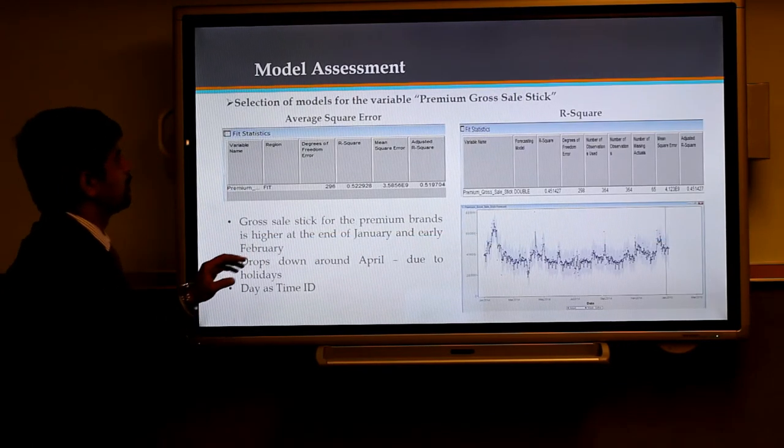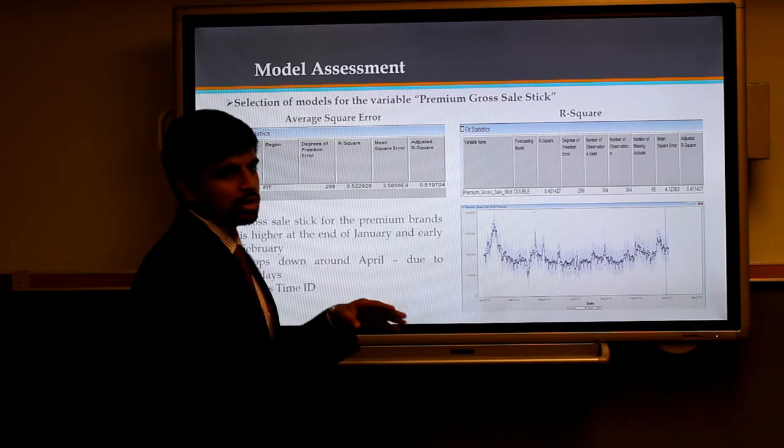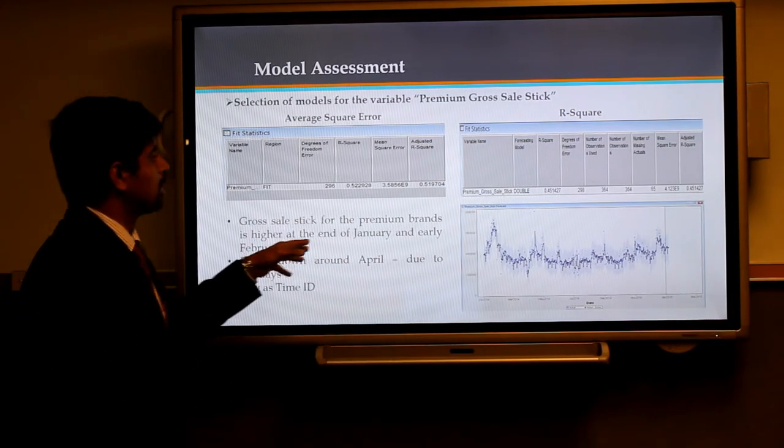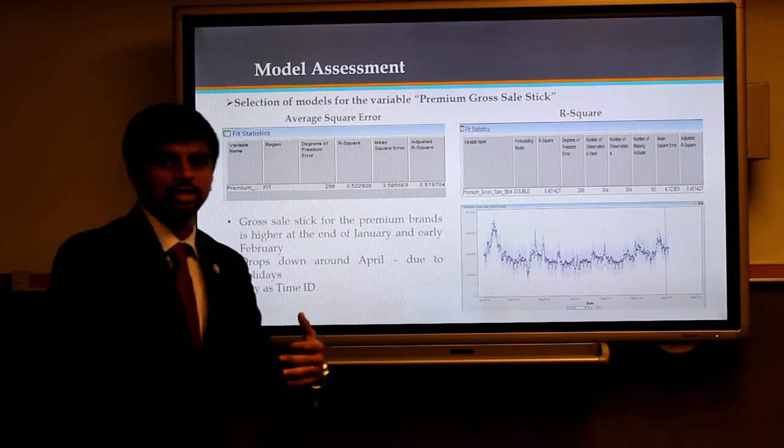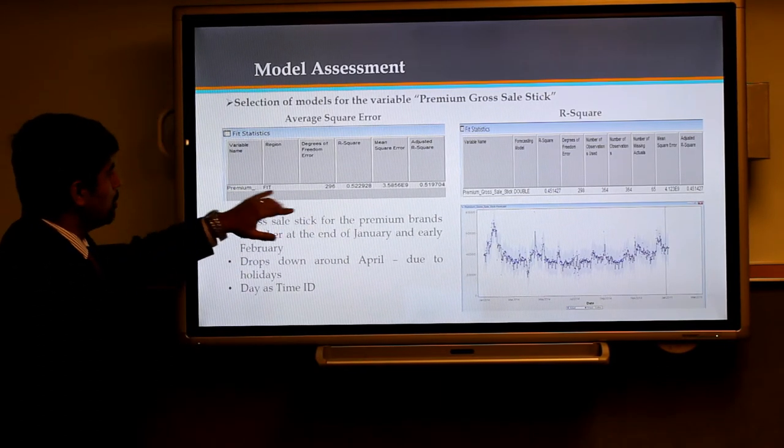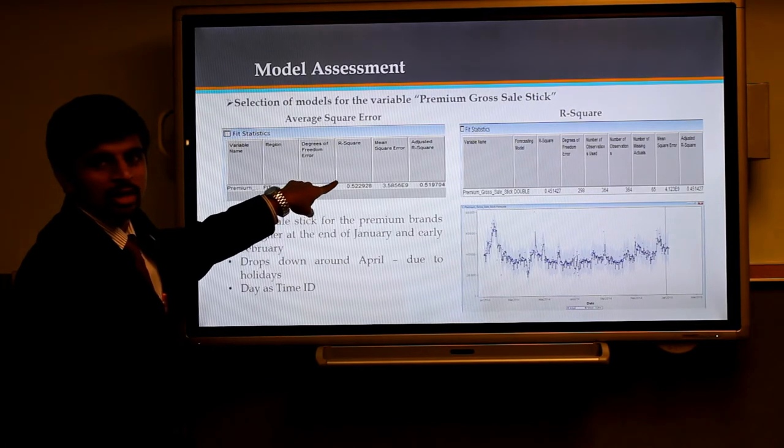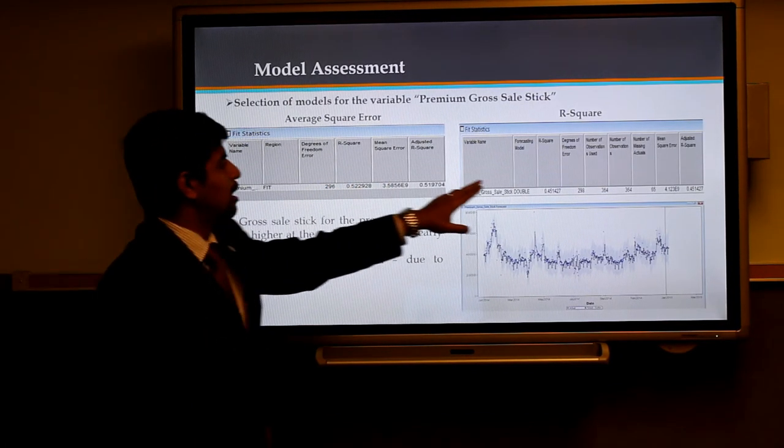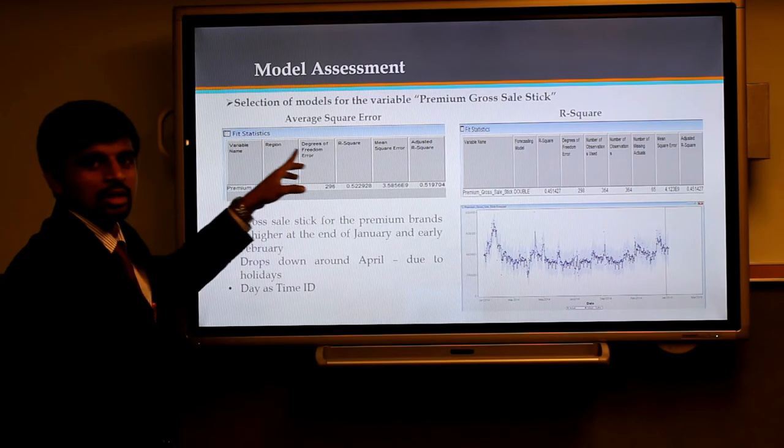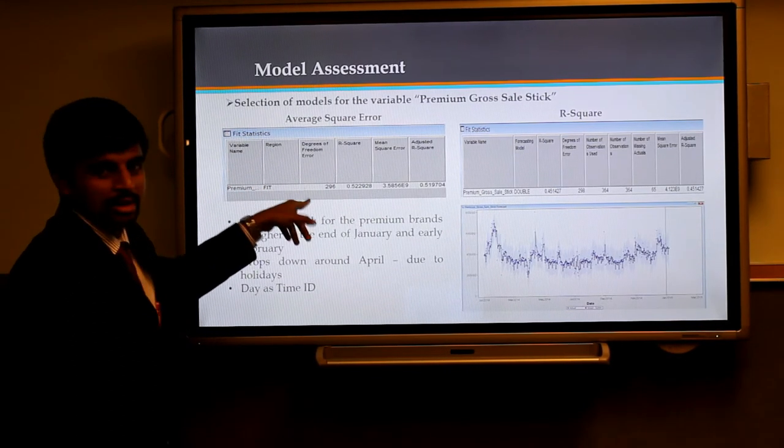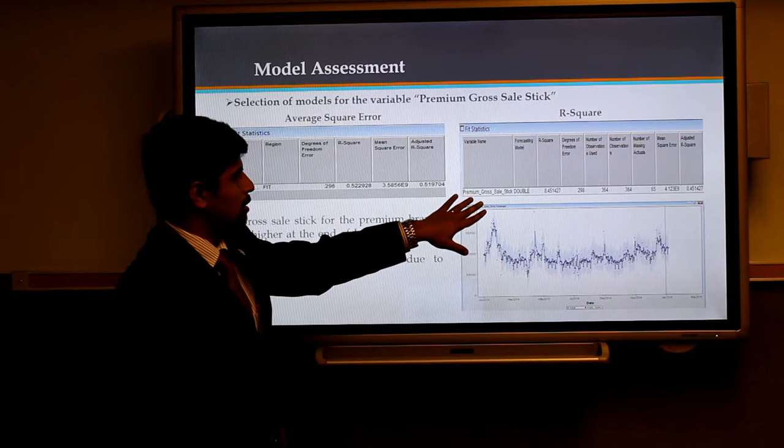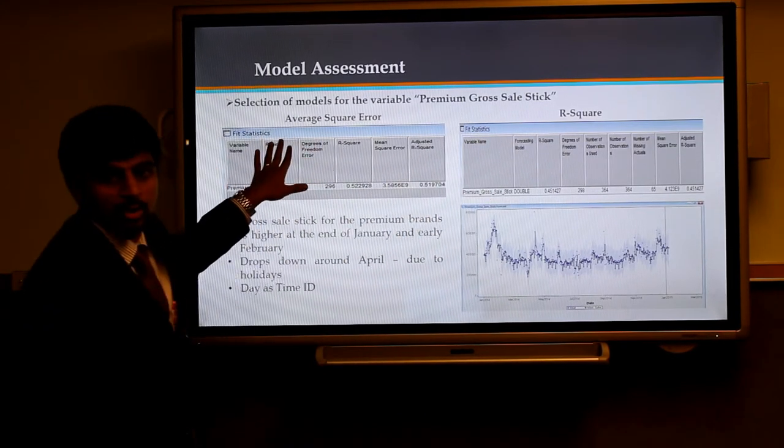Moving on to the selection of the models with respect to the variable premium gross sale sticks, we had to go by the time series model here. As Kiran mentioned about the average square error and the R square criteria, the results are displayed here from the two tables on top. The R square for the average square error was 52.29, and the R square for the R square criteria was 45.17. Out of these two, we can see the average square error criteria has better R square compared to the other one. This time series graph here was based on the average square error as criteria.